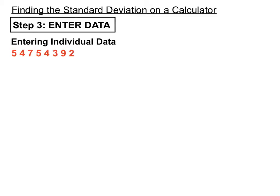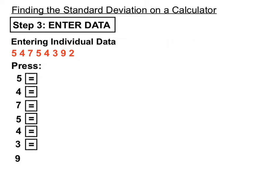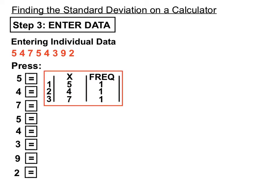To enter DATA, we'll first have a look at entering the individual data and the way we do that is to click on the score, just press the 5, then EQUALS to enter it, then the 4, then EQUALS, then the 7, then EQUALS. So each score gets entered by pressing EQUALS after it until you're done. 9, then EQUALS, then 2, then EQUALS. So what that does is put the scores down the left hand column and the calculator assigns a 1 to each of them until you're done.